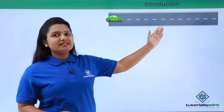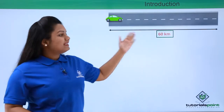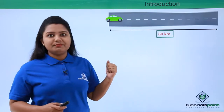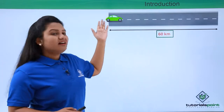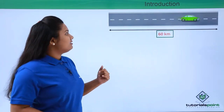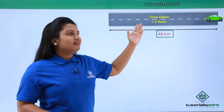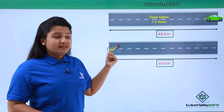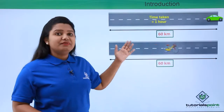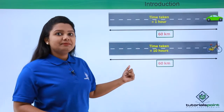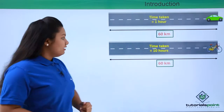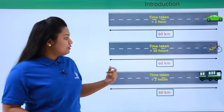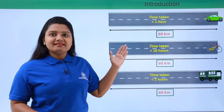Suppose I want to cover this straight road which is 60 kilometers in distance. I can choose any means of transport, and suppose I choose a car. This car covers this road in just one hour. Now if I would have chosen a bicycle, it is very slow compared to the car and takes a much longer time — that is 10 hours. And if I would have chosen a bus instead, it would have taken around two hours to cover the same 60 kilometers.